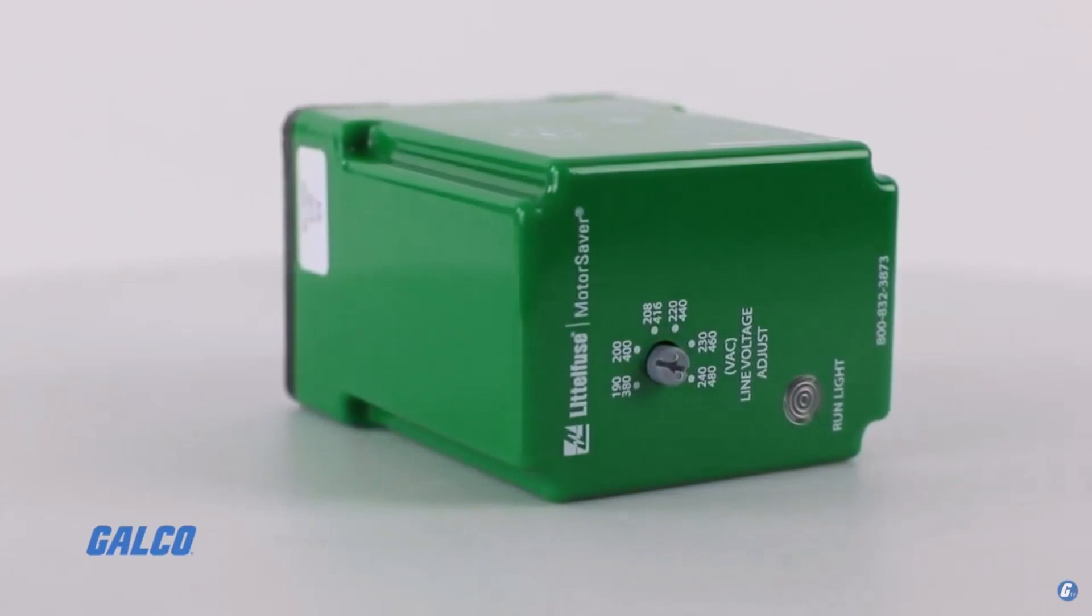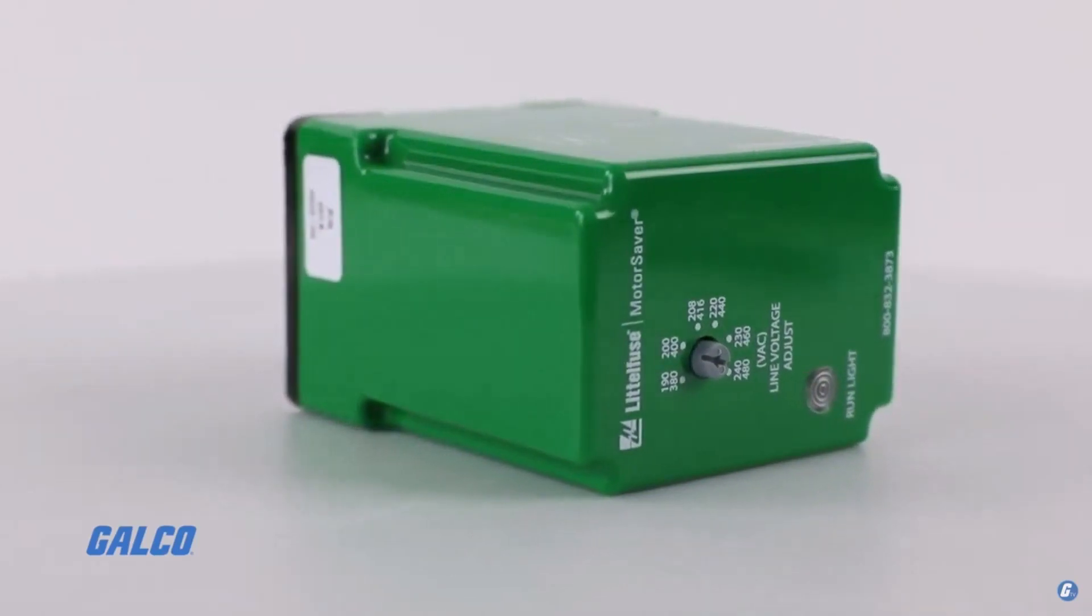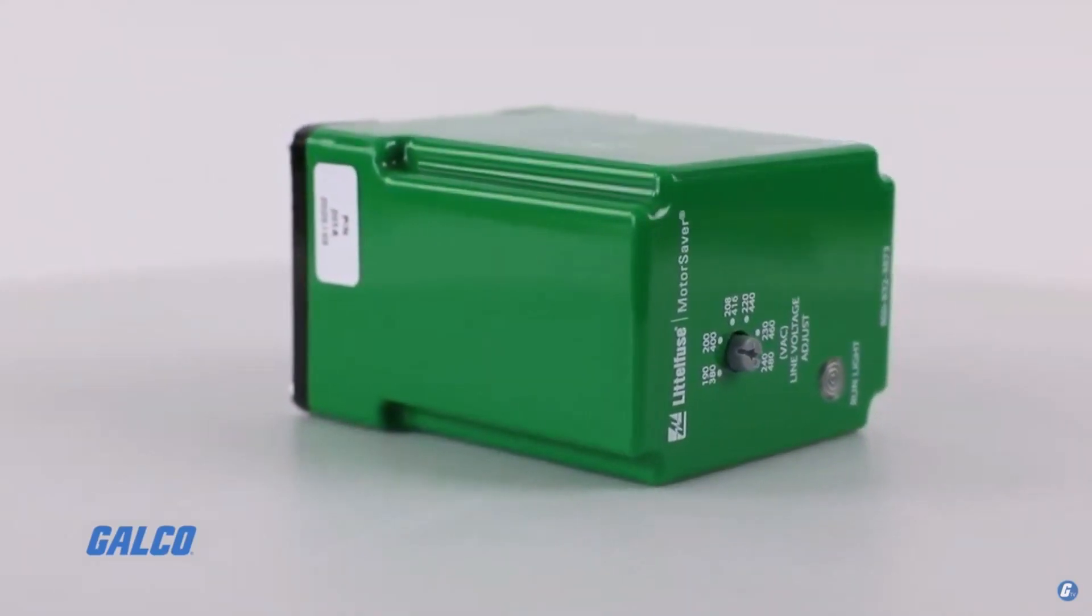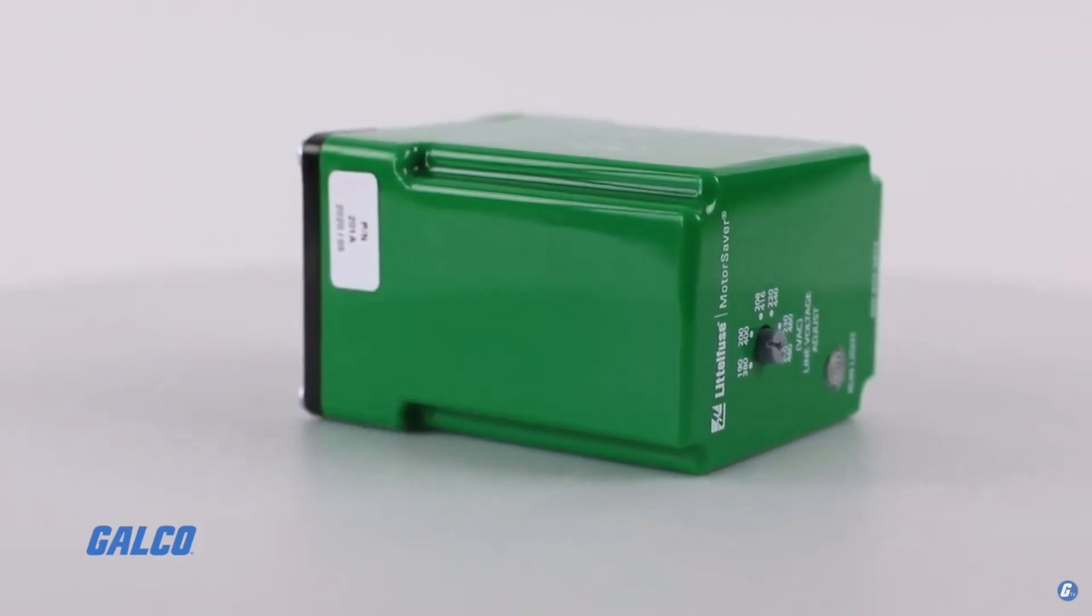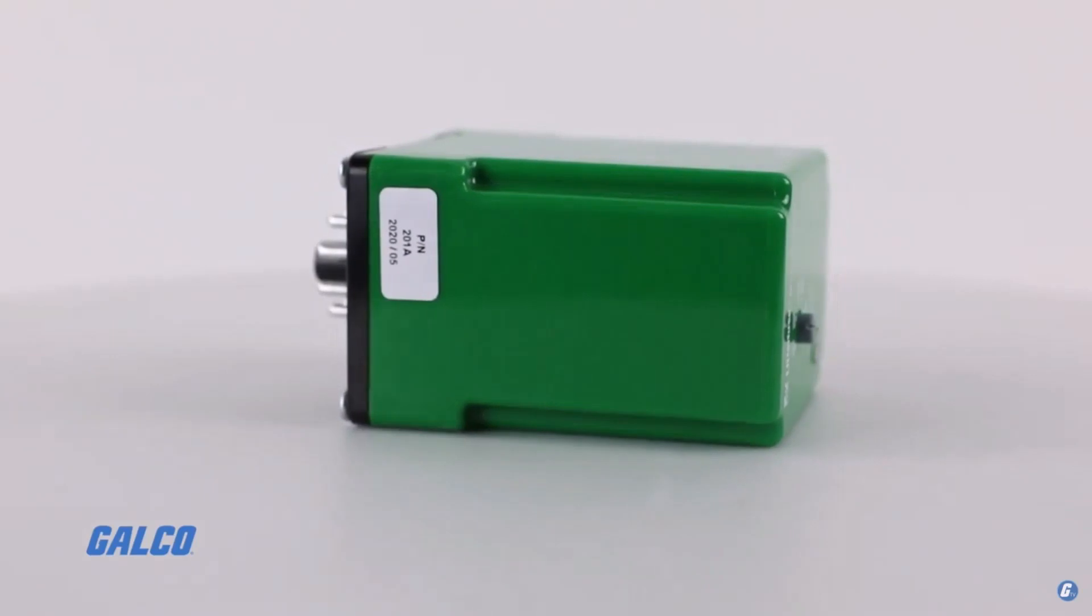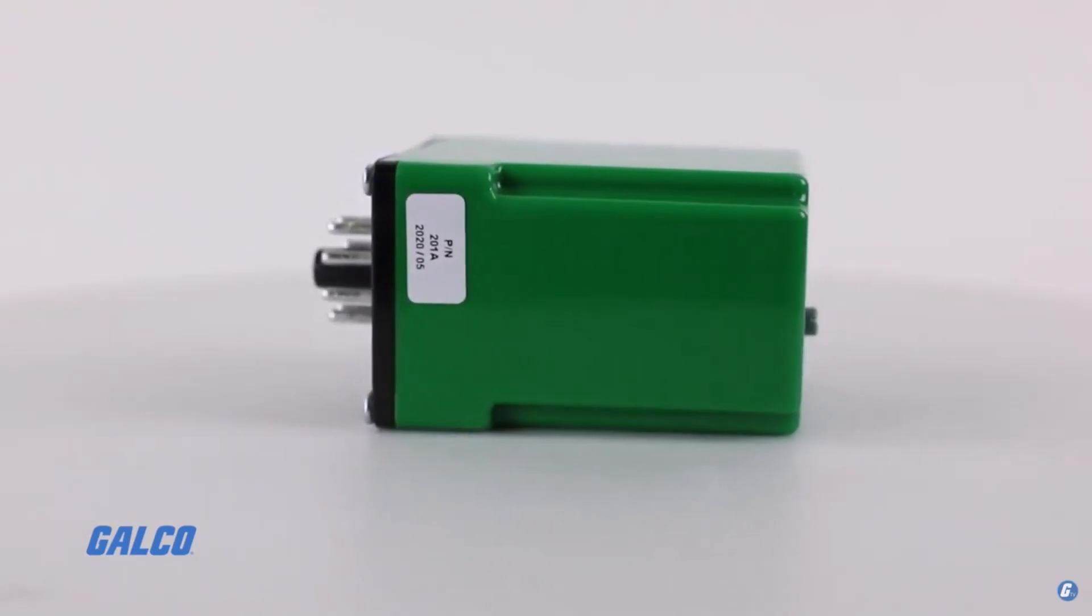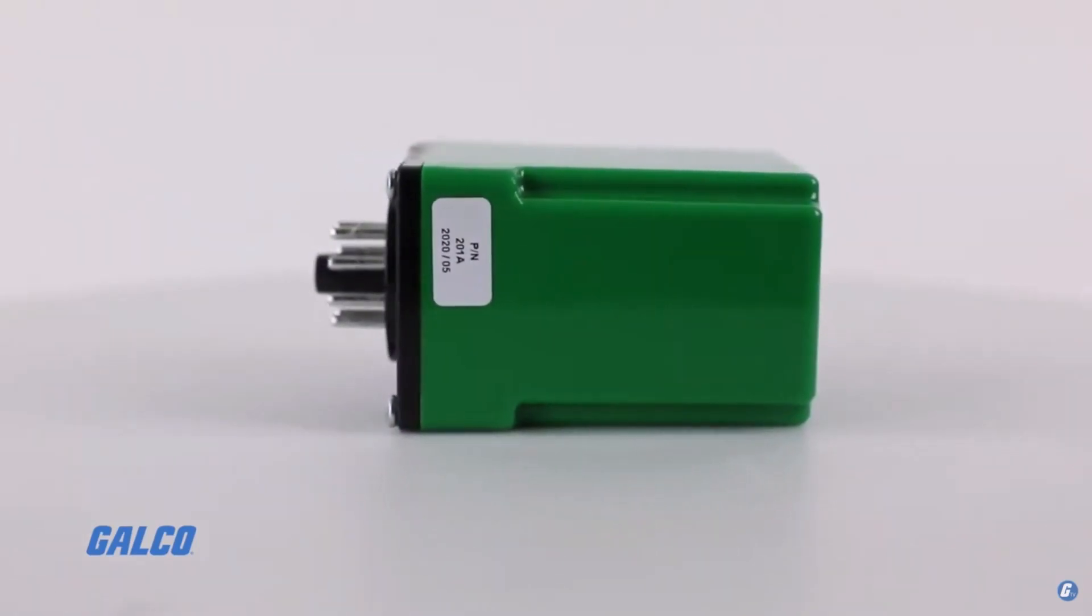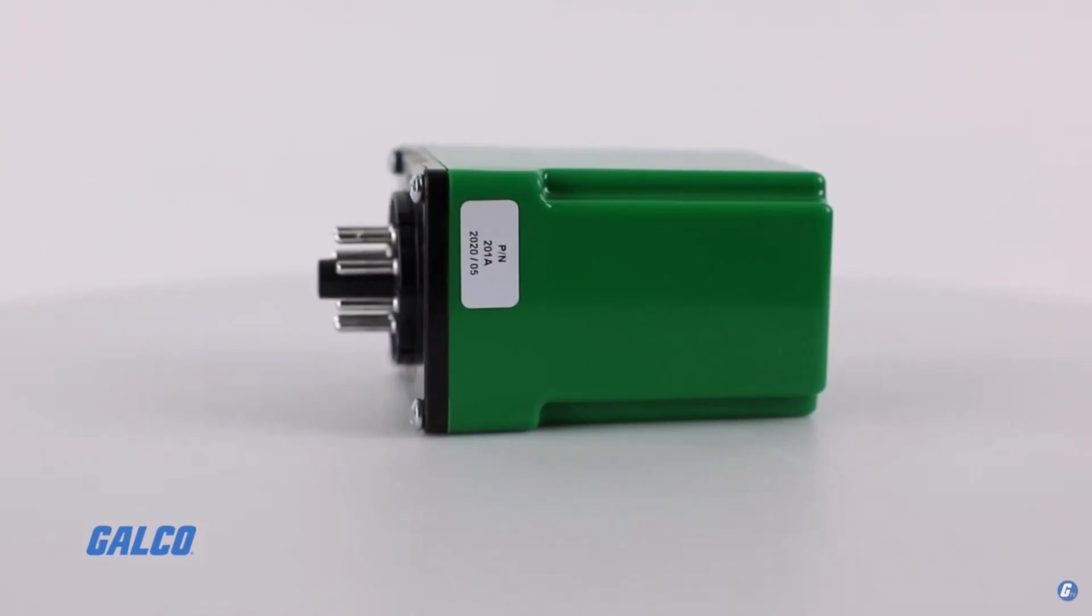Compatible with 190 to 480 volts AC motors of any size, the 201A uses microprocessor-based technology and sophisticated phase sensing circuitry to constantly monitor three-phase voltage and detect harmful line power conditions.